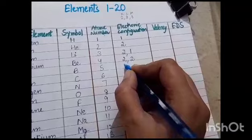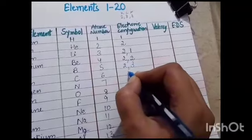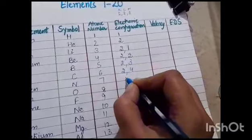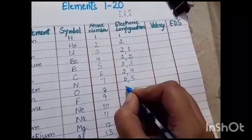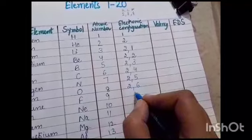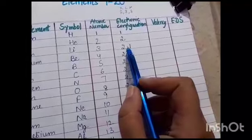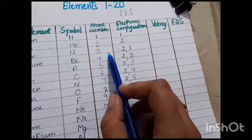For boron, it is 2 and 3. For carbon, it is 2 and 4. For nitrogen, it is 2 and 5. It is 2 and 6. You can also verify that the sum of the numbers is always equal to the atomic number.